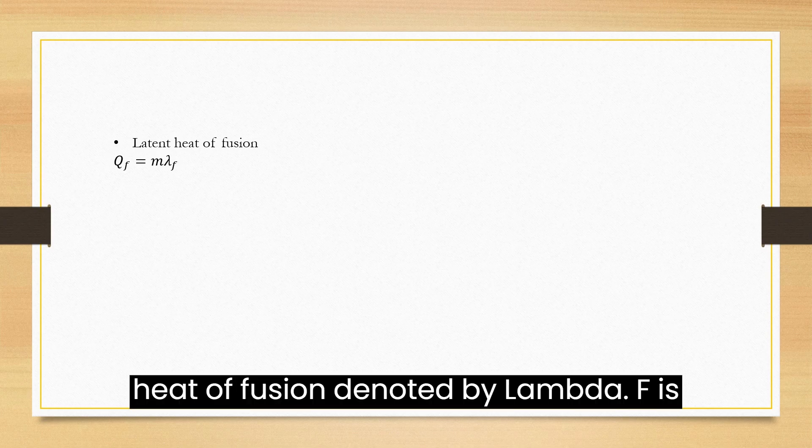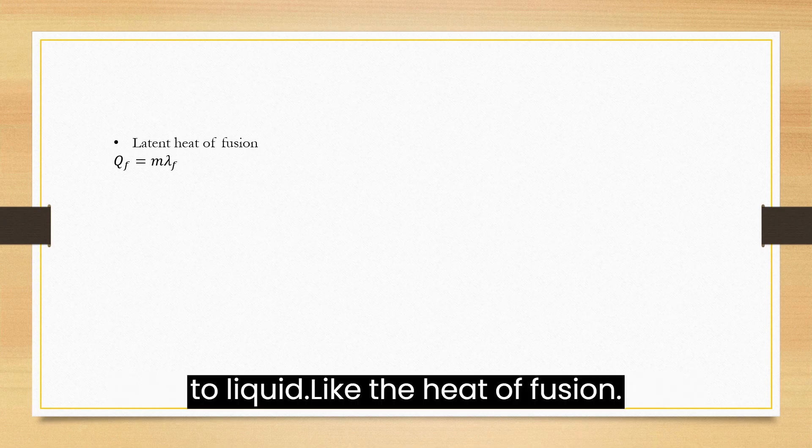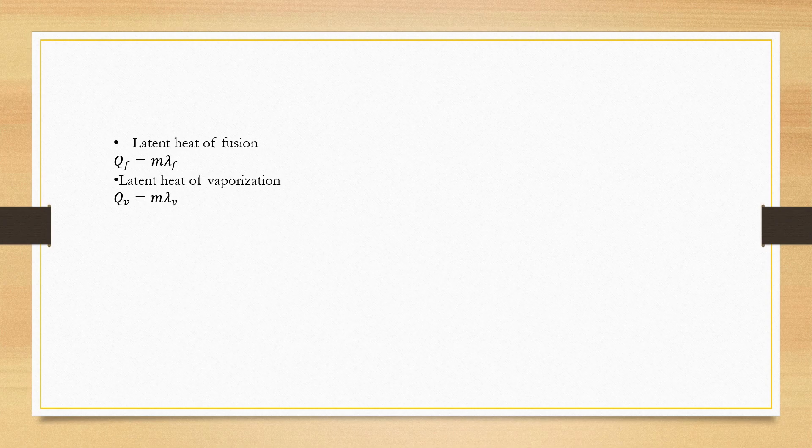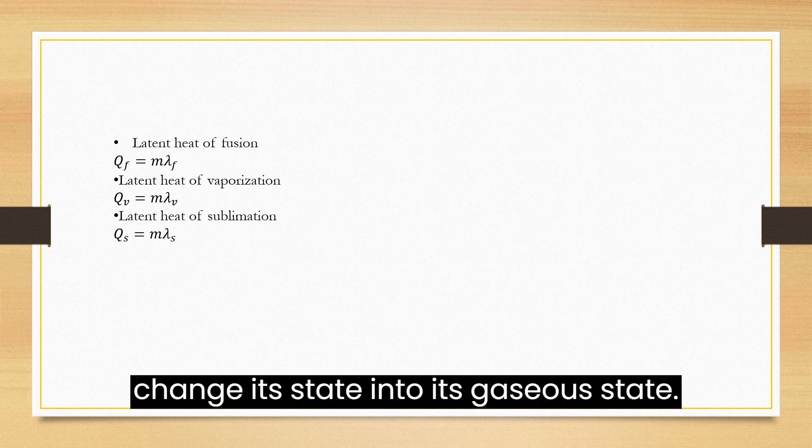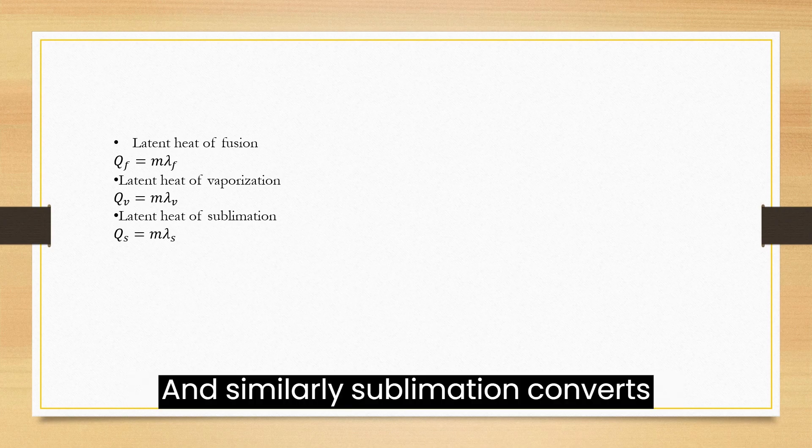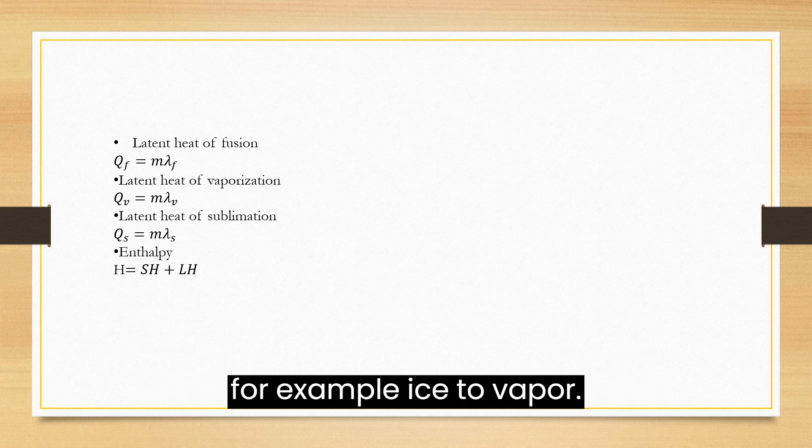Latent heat of fusion, denoted by lambda F, is the amount of heat for conversion from solid to liquid. The latent heat of vaporization measures the heat given to a liquid to change its state into gaseous form. Similarly, sublimation converts directly from solid to gaseous phase, for example, ice to vapor.